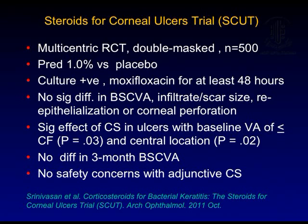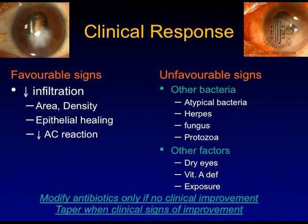The SCUT trial had a large sample size of 500 eyes, answering the question definitively. A significant effect of steroids was seen only in ulcers with baseline visual acuity worse than counting fingers and in central location. Favorable signs of treatment response include decrease in infiltrate area and density, epithelial healing, and decreased AC reaction. Unfavorable signs include infection due to atypical bacteria, herpes, fungus, or protozoa. Other factors like dry eye, vitamin A deficiency, and exposure should be considered, and antibiotics modified if no clinical improvement occurs.